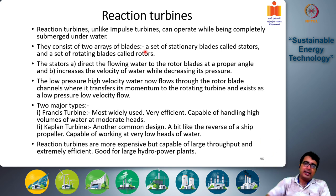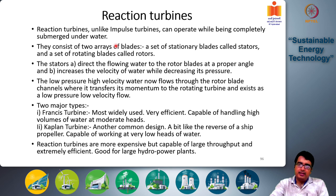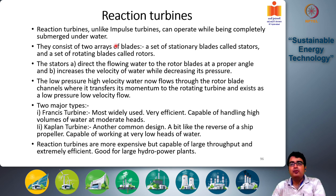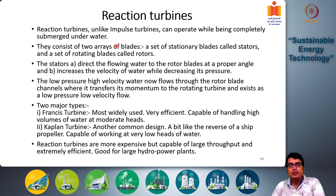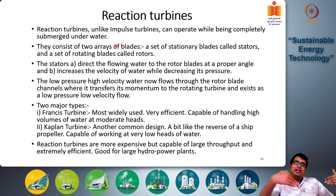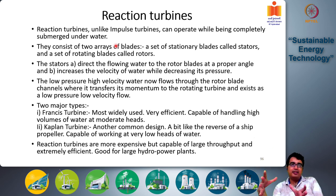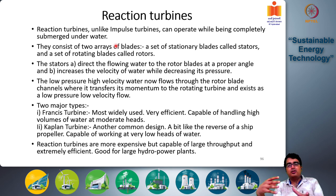Instead of a nozzle-bucket arrangement, reaction turbines have two arrays of blades: a set of stationary blades that do not move, called stators, and a set of rotating blades attached to the turbine shaft, called rotors. The internal blade system is attached to the turbine shaft and is called a rotor.